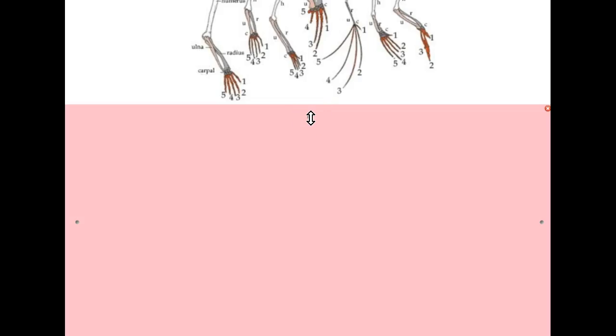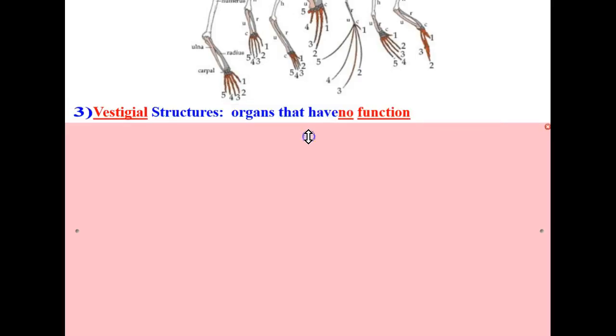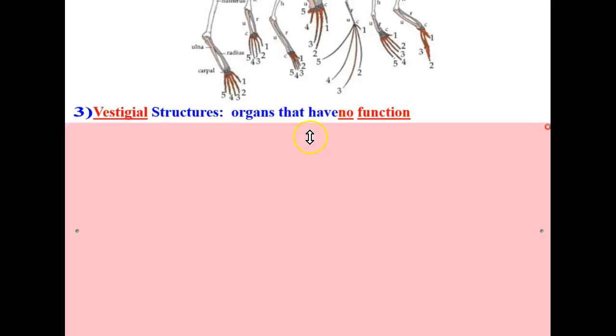The third piece of evidence most scientists believe gives credibility to the theory of evolution are vestigial structures. Vestigial structures are organs that no longer have a function. They are thought to have evolved from ancestry, which used to have a use for the structure, but no longer do.